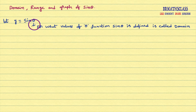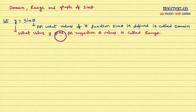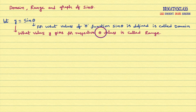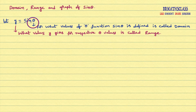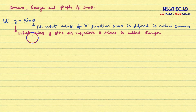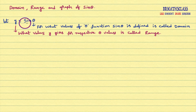Now we will try to know what is the range of the function. What values y gives with respect to theta values is called range. For example, if theta is 30 degrees, sine 30 degrees is 1 by 2 — that means y is 1 by 2, so 1 by 2 will be there in the range. If theta is 90 degrees, sine 90 degrees is 1 — that means y equals 1, so 1 will be in the range. What values sine theta gives, that means what values y gives with respect to theta values, is called range of this function.